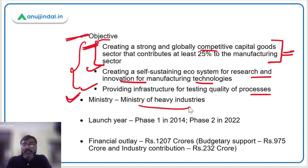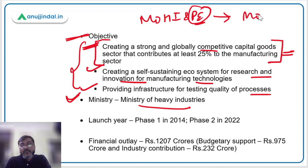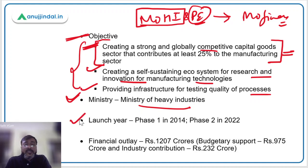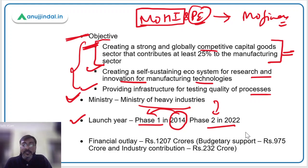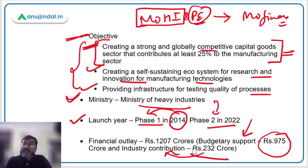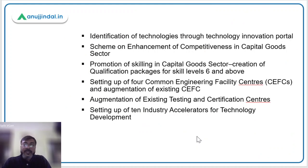The ministry is the Ministry of Heavy Industries. Earlier it was the Ministry of Heavy Industries and Public Enterprises, but very recently the Department of Public Enterprises was transferred to the Ministry of Finance, so this ministry is now just the Ministry of Heavy Industries. Phase 1 was launched in 2014 and Phase 2 has been launched in 2022. The total financial outlay of Phase 2 is rupees 1,207 crores — rupees 975 crore from budgetary support and rupees 230 crore from industries.